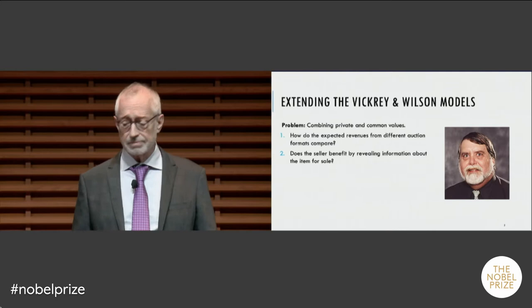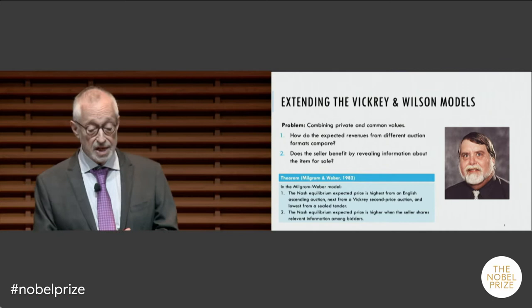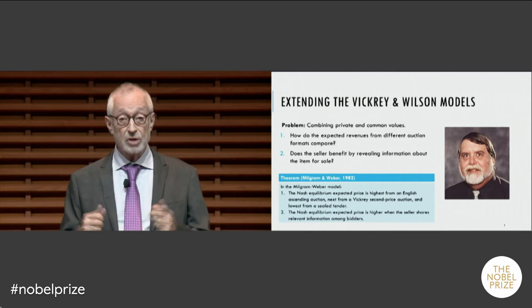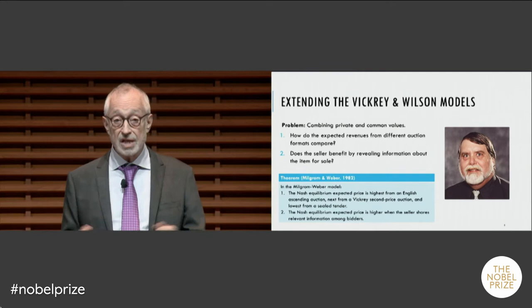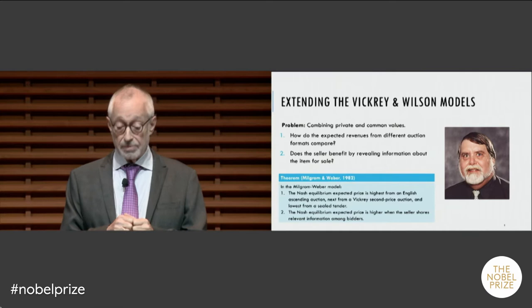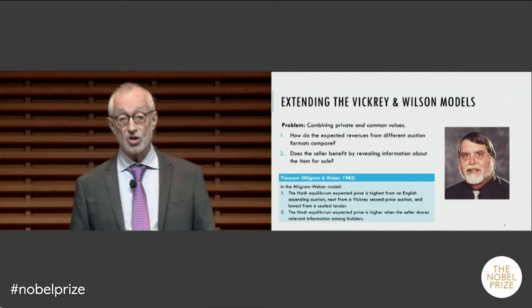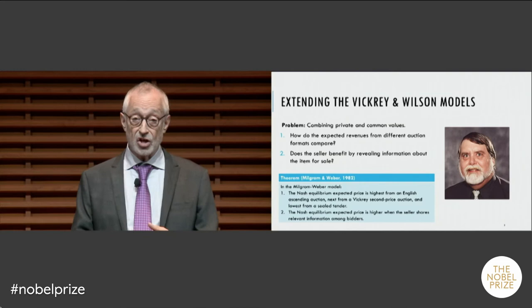One of the theorems we proved in our 1982 paper is that in the model we created, if you study Nash equilibrium, the expected price would be highest with an English ascending auction, next with a Vickrey second-price auction, and lowest with a standard sealed tender — what economists call a first-price auction. We also proved that the Nash equilibrium expected price is higher when the seller shares relevant information than when he does not. So we began to learn how auction rules affect both efficiency and revenue.